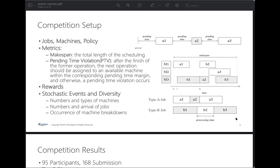The type B job arrives slightly later than the type A ones, and the policy assigns the type A job to M1 at time 0 and the type B job to M2 at time 1. Then, at time 8, it simultaneously assigns them to M3 and M1 respectively.